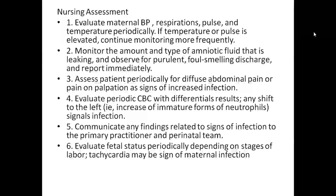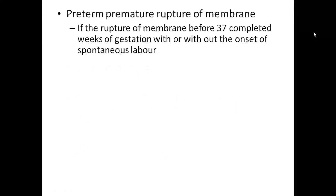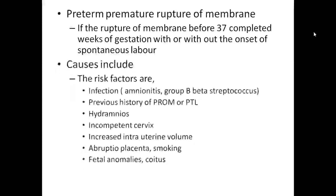Communicate any findings related to signs of infection to the primary practitioner. Evaluate fetal status periodically depending on the stages of labor; tachycardia may be a sign of maternal infection. Preterm premature rupture of membrane (PPROM) is defined as rupture of membranes before 37 completed weeks of gestation, with or without onset of spontaneous labor.